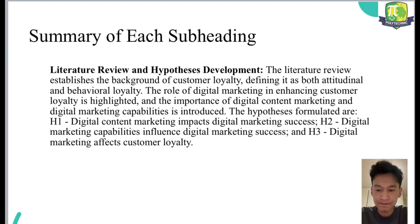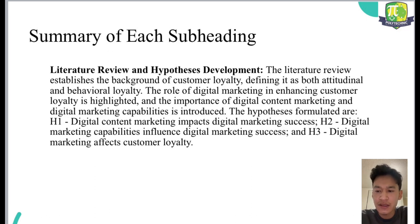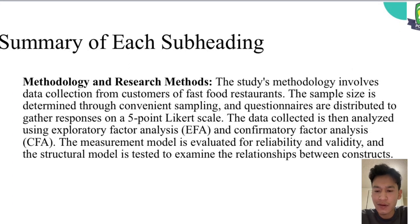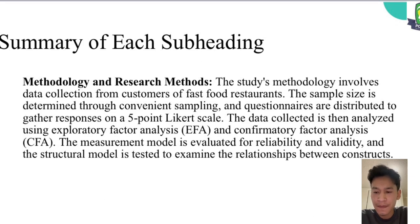Now I'll be talking about the summary of each subheading. The first one is literature review and hypothesis development. The literature review exemplifies the background of customer loyalty, defining it as both attitudinal and behavioral loyalty. Now the methodology and research methods. The study methodology involves data collection from customers of fast food restaurants. The sample size is determined through convenience sampling, with questionnaires distributed to gather responses on a five-point Likert scale. The measurement model is evaluated for reliability and validity, and the structural model is tested to examine the relationships between constructs.